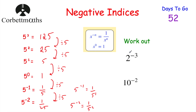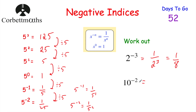Let's look at a couple of examples. First: 2 to the power of negative 3. Because we've got a negative power, I'm going to write 1 over 2 cubed. 2 cubed is 2 multiplied by 2 multiplied by 2 — 2 times 2 is 4, times 2 is 8 — so the answer is 1 over 8. Next: 10 to the power of negative 2. Again, negative power means 1 over 10 squared. 10 squared is 100, so that's 1 over 100.